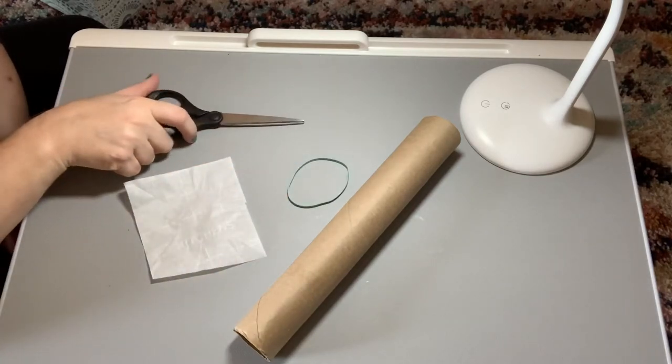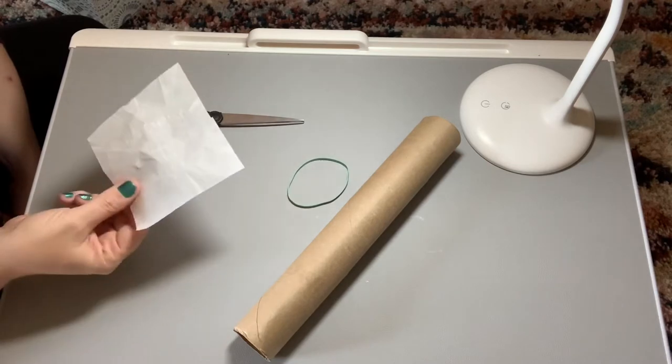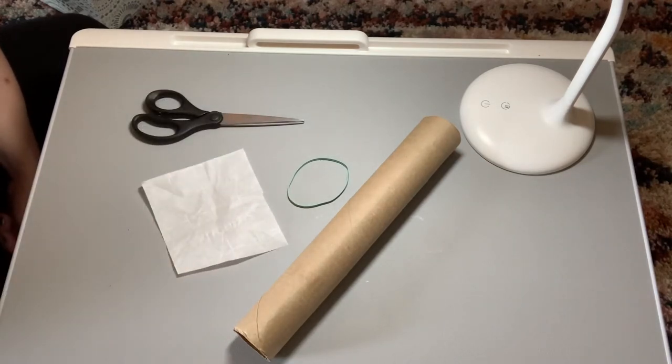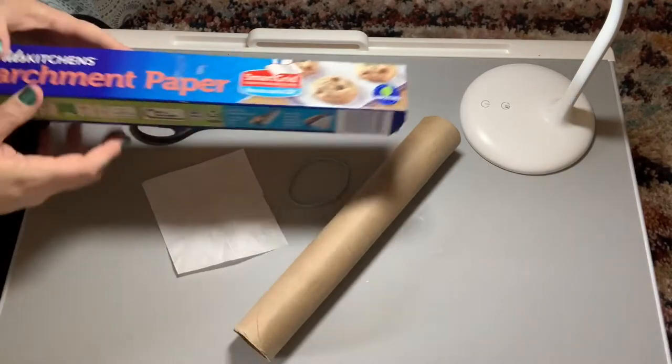A pair of scissors, and then either parchment paper or wax paper, something you might have in your kitchen that might come in a package kind of like this.